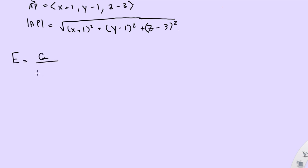E equals, remember we're using Q over 4πε₀r². That's our formula. So our Q we know is 100 nanoCoulombs, because the problem said that. 4πε₀ stays the same. And then r², this is our r right here. So since this is square root and not squared, we can just cancel the two and write it like this: x plus 1 squared plus y minus 1 squared plus z minus 3 squared.